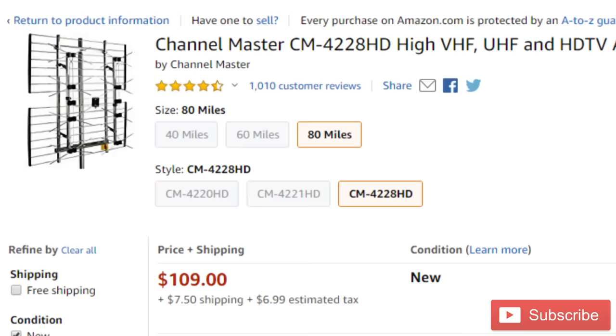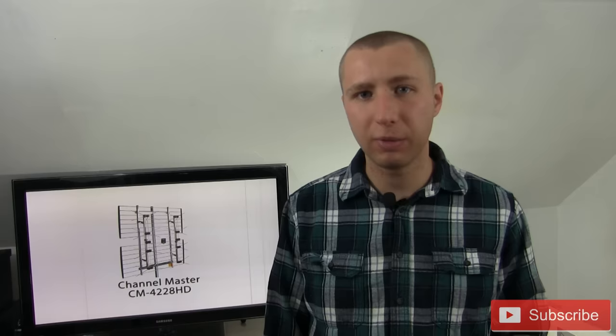This model runs for about $109 on Amazon, but keep in mind, you'll also have to purchase a four, six or 10 foot pole depending on how high you want to mount it, chimney straps or side brackets with either a 12 or 18 inch standoff if you have a roof overhang.